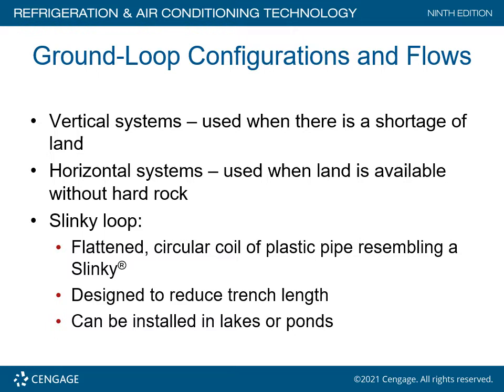Ground loop configurations: vertical systems are used when there is a shortage of land; horizontal systems are used when land is available without hard rock. A slinky loop is a flattened circular coil of plastic pipe resembling a slinky toy. It is designed to reduce trench length and can be installed in lakes and ponds.